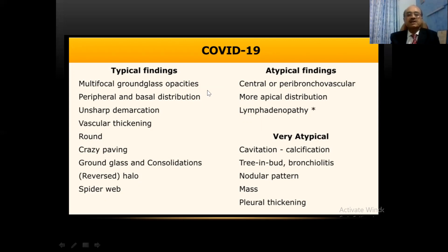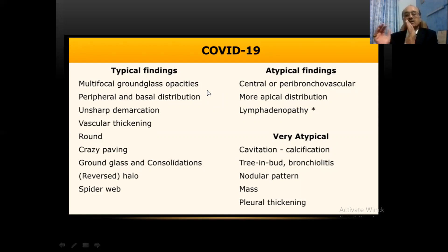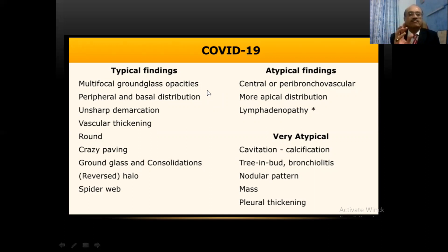We have now seen the five or six stages of the CORADS classification. COVID-19 CT scans can present certain typical findings, but we must also be aware of atypical findings, making it more important to consider clinical findings, history, blood investigations, PCR, and CT scan together. Typical findings include multifocal ground glass opacities that are peripheral and basally distributed, possibly with unsharp demarcation, vascular thickening, crazy paving appearance, or ground glass with consolidations. The presence of a reversed halo sign indicates extensive COVID-19 infection, and a spider web sign has also been described.